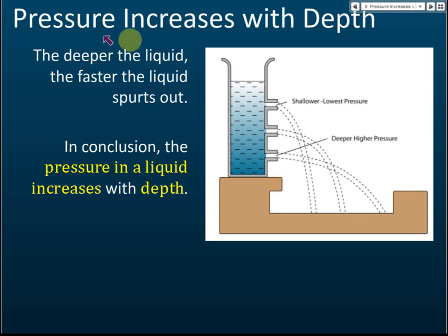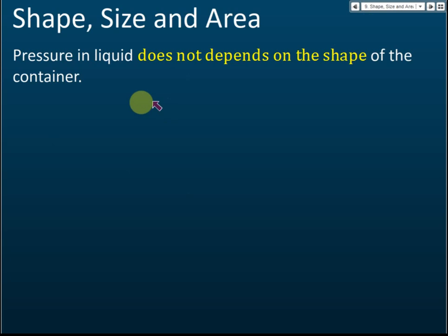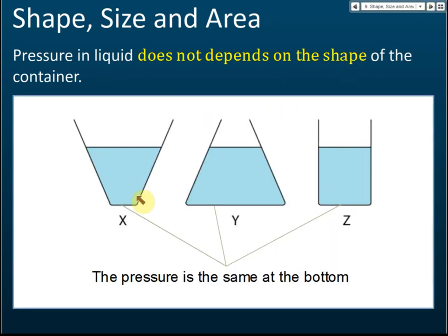Pressure increases with depth. Now, pressure in a liquid does not depend on the shape, size, or area of the container. Here we have three containers with different shapes, but the height of the liquid is the same in all three. Since the depth is the same, the pressure at the bottoms is the same, even though the containers have different shapes and different surface areas.